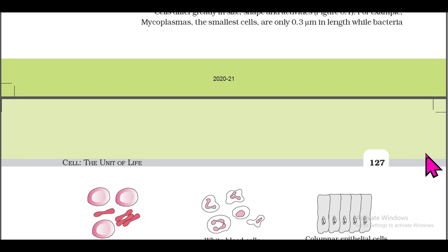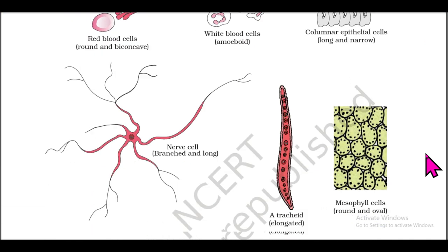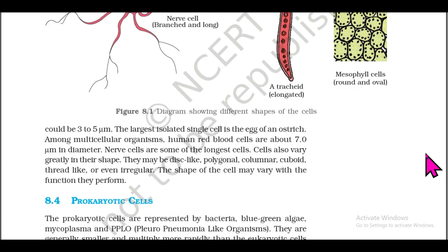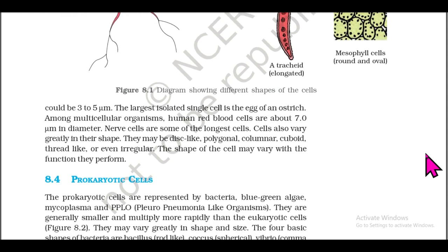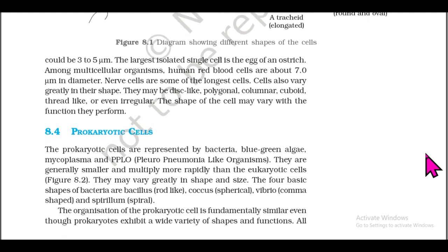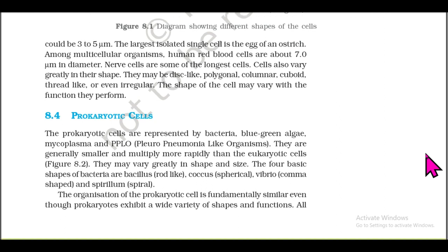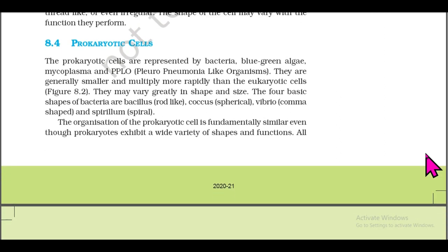Cells differ greatly in size, shape, and activities. For example, mycoplasmas, the smallest cells, are only 0.3 micrometers in length, while bacteria could be 3 to 5 micrometers. The largest isolated single cell is the egg of an ostrich. Among multicellular organisms, human red blood cells are about 7.0 micrometers in diameter, and nerve cells are some of the longest cells. Cells also vary greatly in shape: disc-like, polygonal, columnar, cuboidal, thread-like, or even irregular.